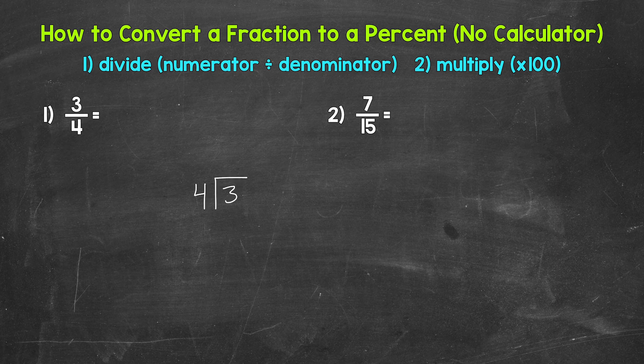Now, as far as 3 divided by 4 — how many whole groups of 4 in 3? How many 4s in 3? Well, we can't do that. So we need a decimal after 3 and then a zero in order to start to work through this problem.